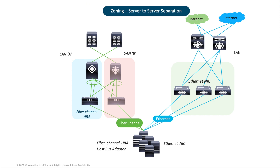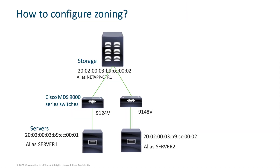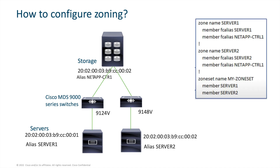So when we configure zoning on our Cisco MDS switches, we are going to allow servers to connect to the storage systems, but they're not going to be connected to each other — that makes things more secure and stable. In this example, I've got my storage system at the top; its WWPN is that long address under the storage icon. I've configured an alias to make things more convenient — the alias for the storage system is NetApp Controller One. The server at the bottom has its own WWPN with an alias of Server One, and the server on the right has its own alias of Server Two. There are a couple of MDS Cisco switches between storage and servers, so I need to allow Server One to connect to storage and Server Two to connect to storage as well. I will configure a separate zone for each server and group them into a zone set.